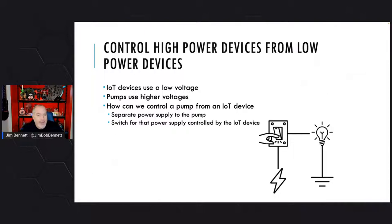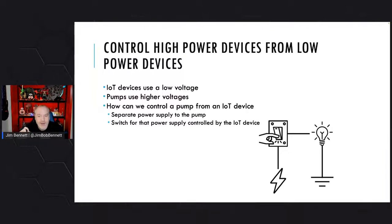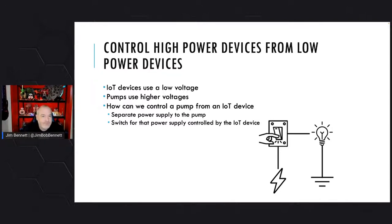Let's dive right in. Let's talk about how we power devices. In the previous series, we powered an LED from our Raspberry Pi. We actually used the five-volt pin on the Raspberry Pi to send power to an LED, and that's fine because we can light an LED with five volts. But when it comes to more powerful devices, we can't power those from an IoT device.